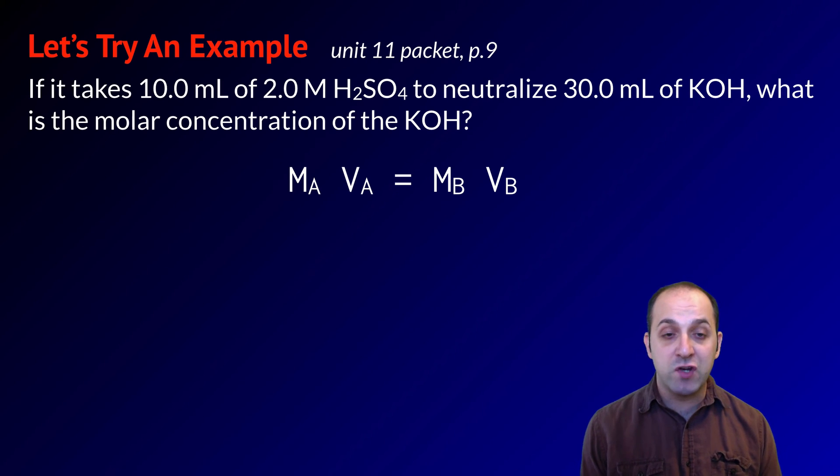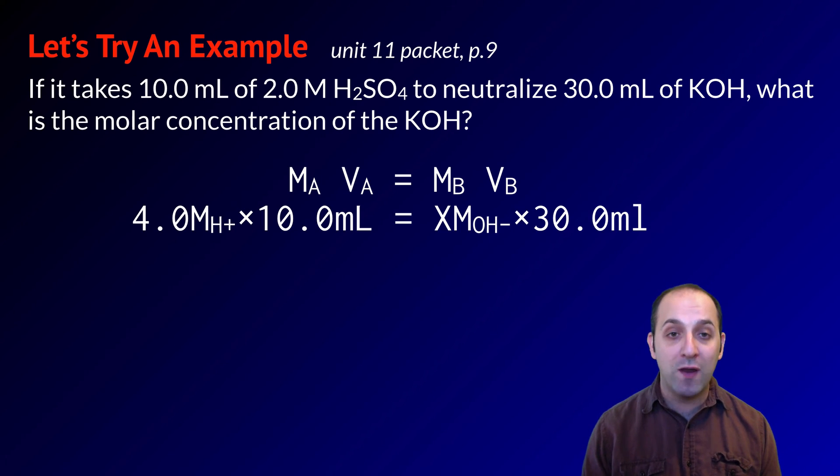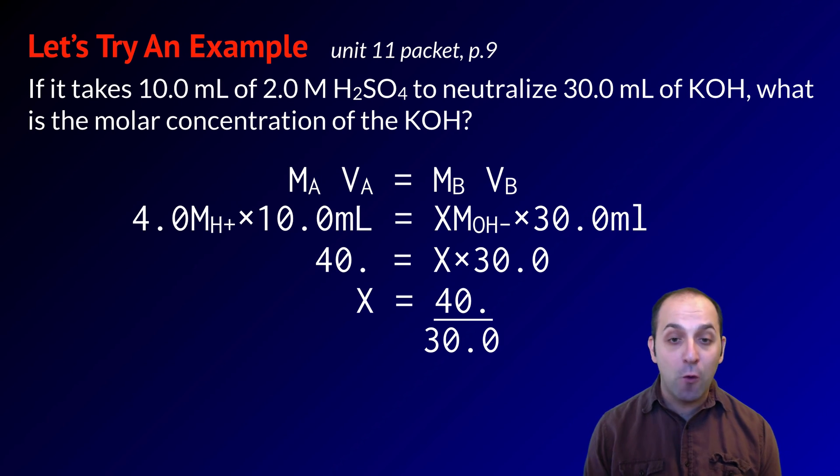So in order to do this, I'm going to use the titration equation, MA times VA equals MB times VB. Notice that the molarity of my protons is 4.0. That's because I have 2.0 molar solution of H2SO4, and that H2SO4 has two protons on it. 2 times 2 is 4. I've got 10.0 milliliters of the H2SO4 that I used. I don't know the molarity of the hydroxide ions. That's what I'm trying to figure out, and I've got 30.0 milliliters of the KOH that I used. Rearranging this, I wind up with 40 is equal to X times 30. So X is equal to 40 divided by 30.0. X is going to be equal to 1.3 molar solution of KOH rounded off to the nearest tenth. KOH only has one hydroxide ion on it, so the molarity of the hydroxide ions equals the molarity of the KOH.